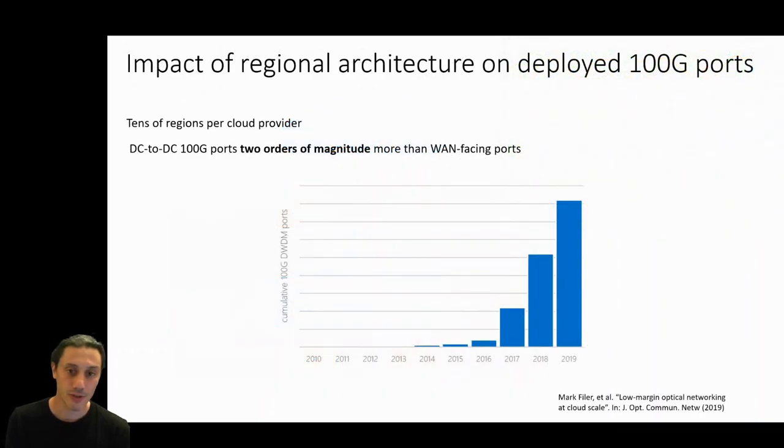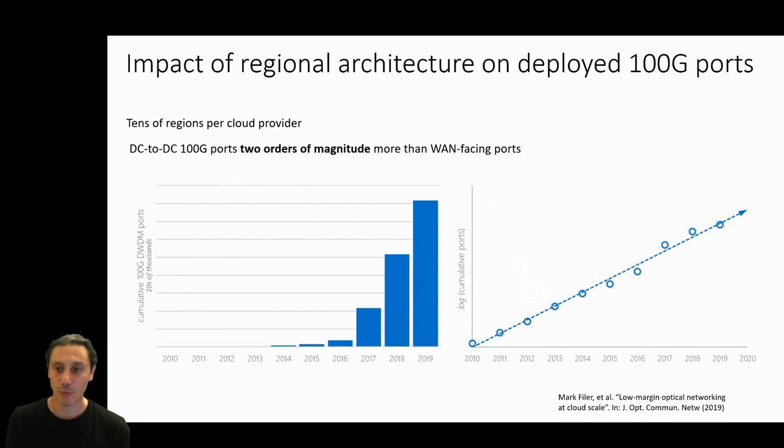The impact of this shift to a regional architecture is evident when examining the number of deployed 100 gigabit ports over time, especially since they moved to the regional model. Overall, the growth has been exponential year over year, with the number of ports dominated by the regional connectivity by nearly two orders of magnitude compared to ports deployed in the wide area network. It is thus not an exaggeration to say that DCI has become one of the most important pieces of the cloud puzzle.